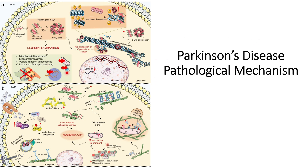These actin-cofilin rod structures form not only because of pathogenic changes but also because of increased amounts of afadin. Furthermore, if overexpression of DRP1 is induced in these cells, the homeostasis of the mitochondria can be recovered.